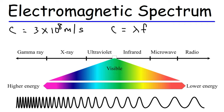As you move towards the right, that is towards the radio waves, the wavelength increases. Radio waves have the longest wavelength out of all the electromagnetic radiation in this spectrum. As you go towards the left, the frequency increases. So gamma radiation has the highest frequencies. X-rays are higher in frequency than ultraviolet radiation. Microwaves have greater frequency than radio waves.